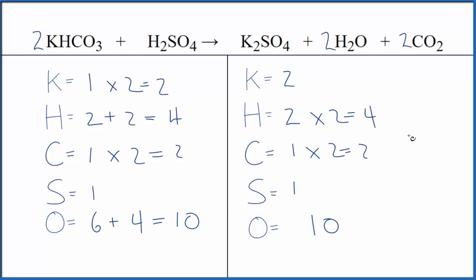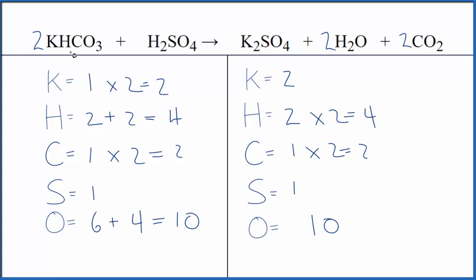And we're done — this equation is balanced. In an equation like this, what causes problems is making sure you count up all the atoms very accurately. We have all of these oxygens, so each time you change an oxygen, you need to make sure you recount those correctly. This is Dr. B with the balanced equation for KHCO₃ plus H₂SO₄, potassium hydrogen carbonate plus sulfuric acid. Thanks for watching.